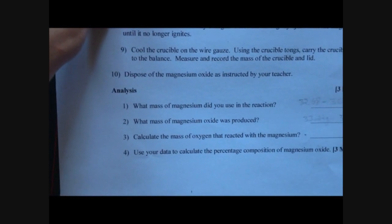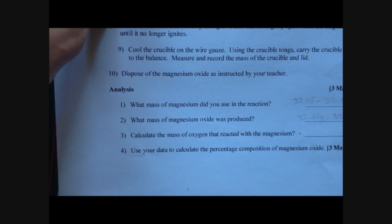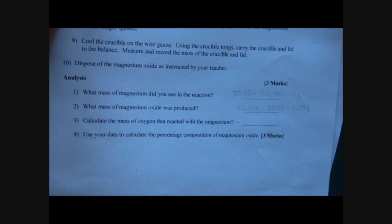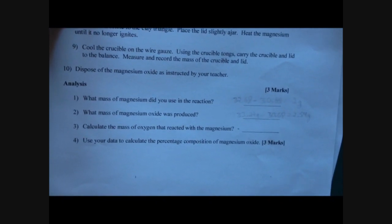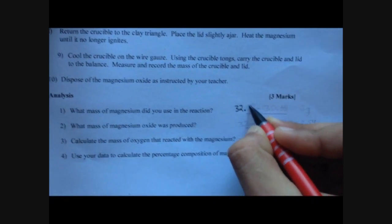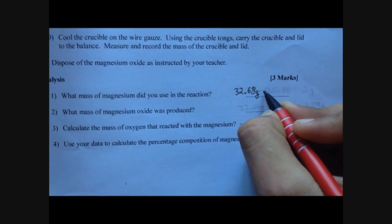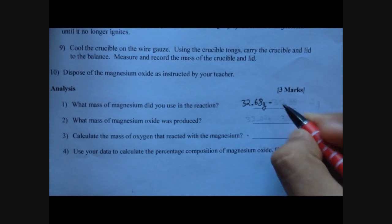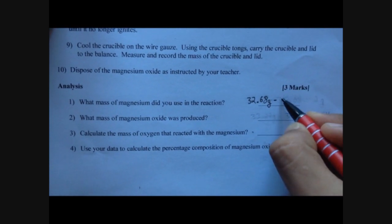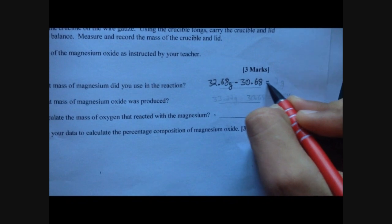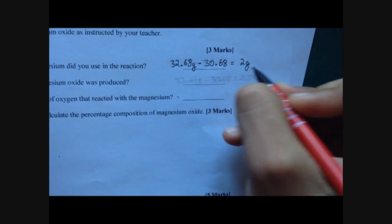Question 1: What is the mass of magnesium used in the reaction? To calculate that, take the mass of crucible, lid and magnesium — 32.68 grams — and subtract the mass of the clean, empty crucible and lid. This gives you the mass of magnesium used.